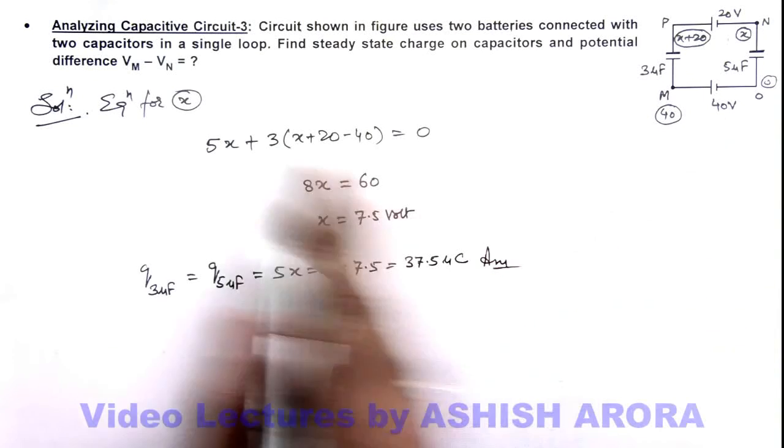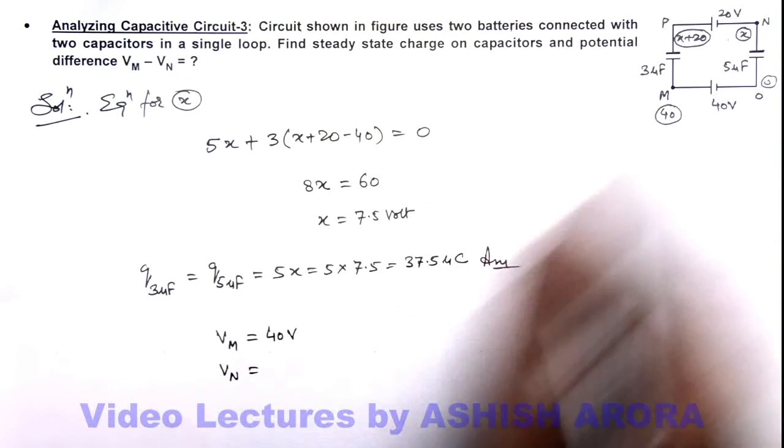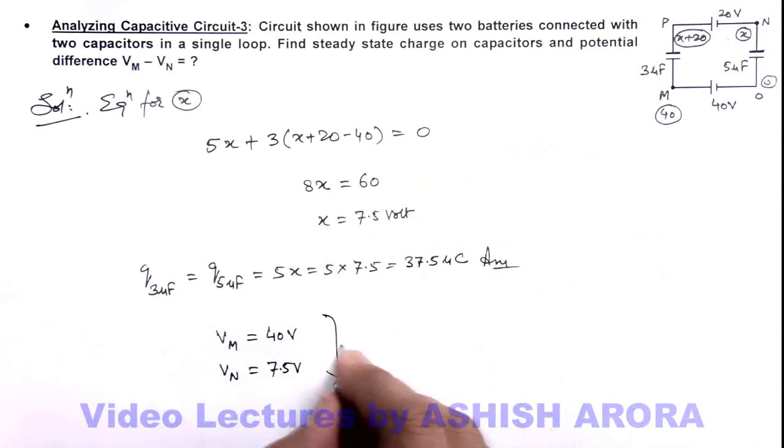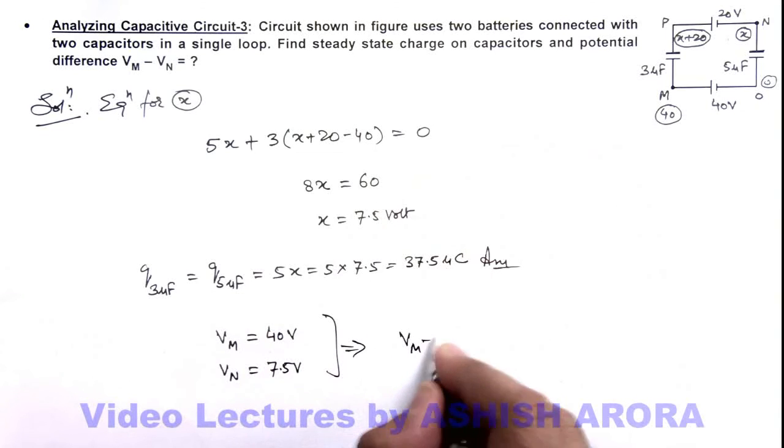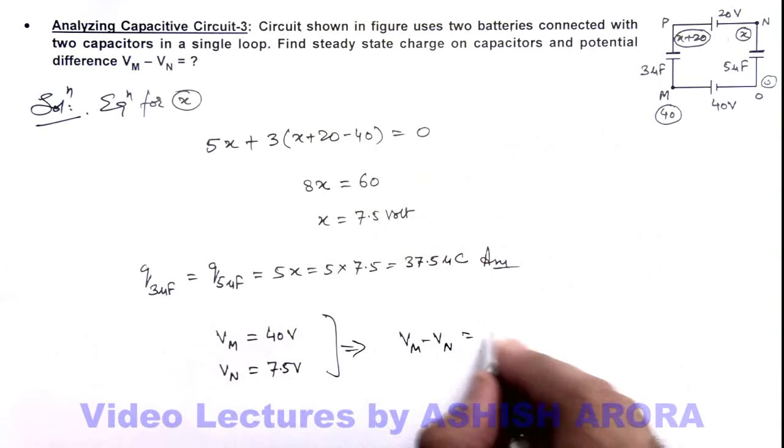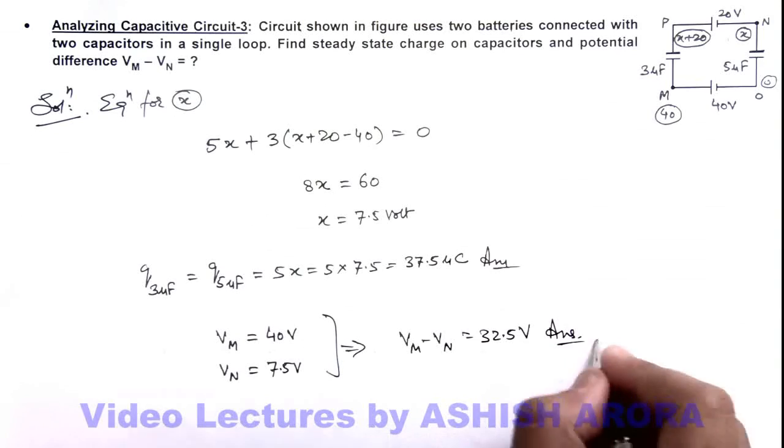If we wish to find out the potential difference VM minus VN, so here VM we can directly write as 40 volt, and VN we have already calculated as x which is 7.5 volt. So from here we can calculate VM minus VN, that is 40 minus 7.5, this is 32.5 volt. That will be another answer for this problem.